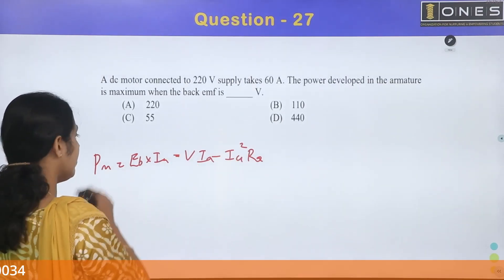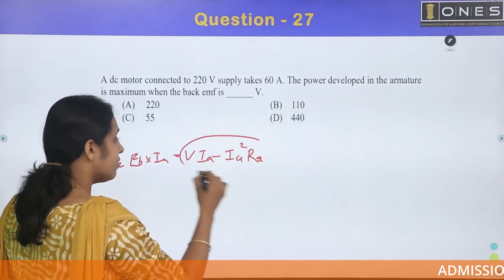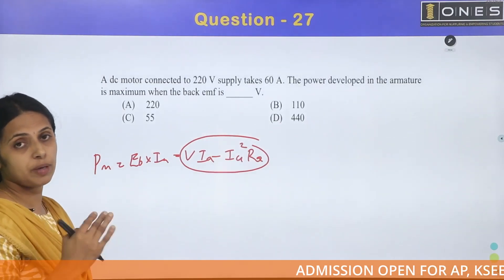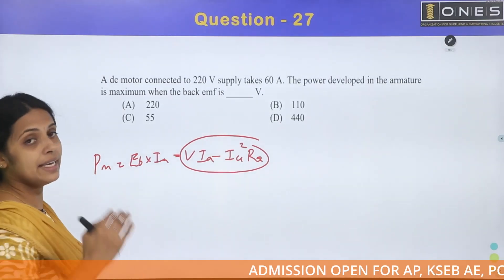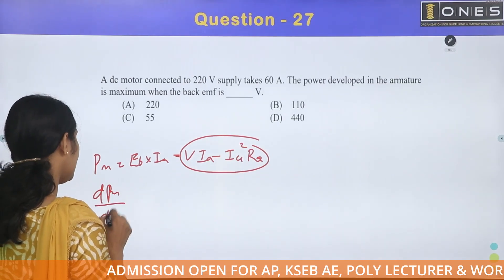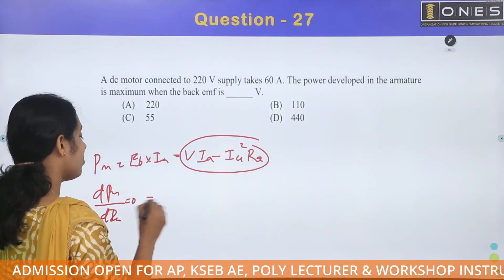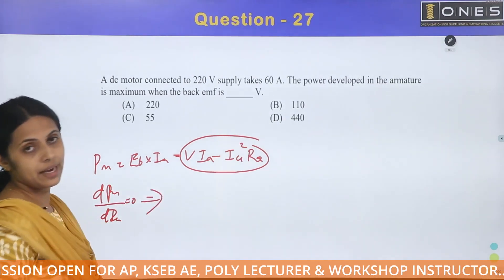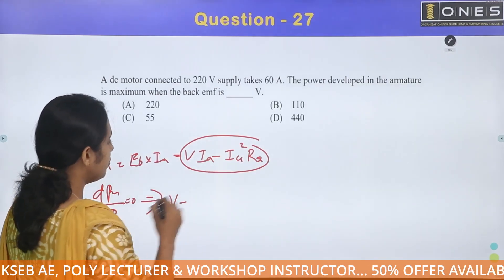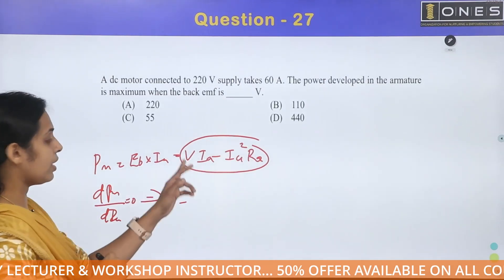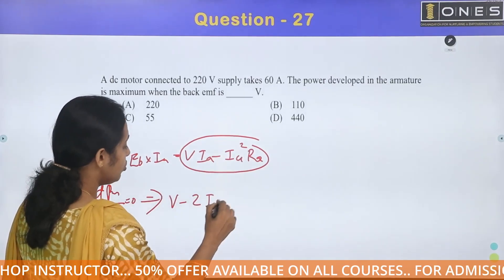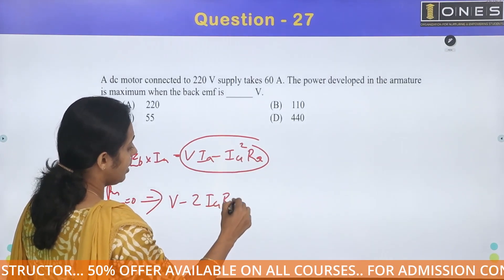For maximum mechanical power developed, we differentiate with respect to Ia and set it to zero: dPm/dIa = 0. Taking the derivative of V × Ia − Ia² × Ra with respect to Ia gives: V − 2Ia × Ra = 0.